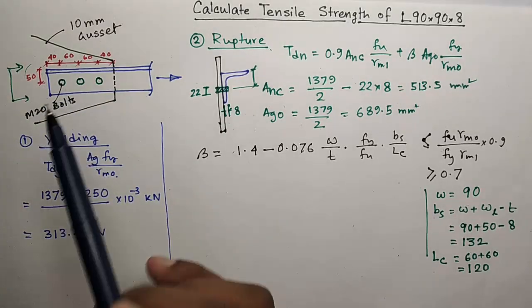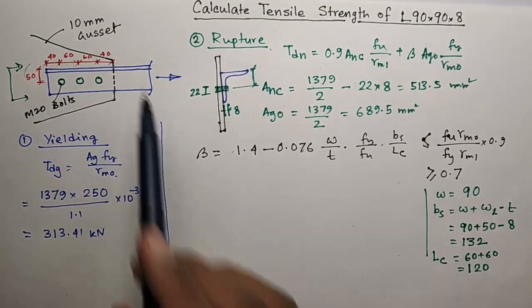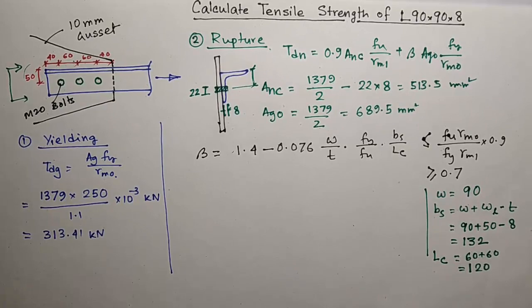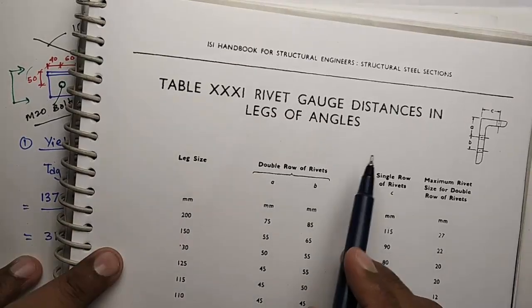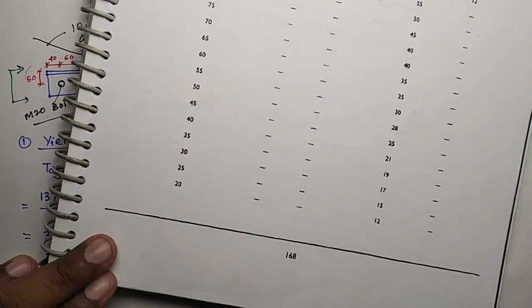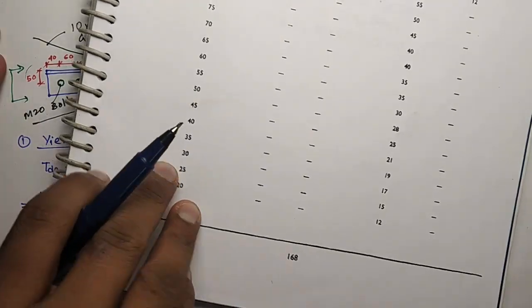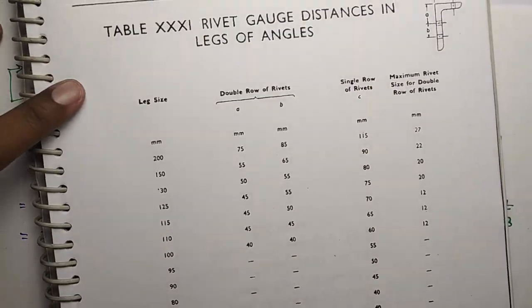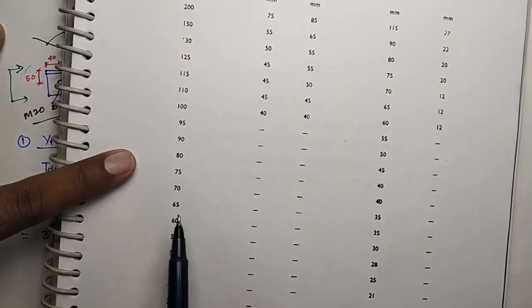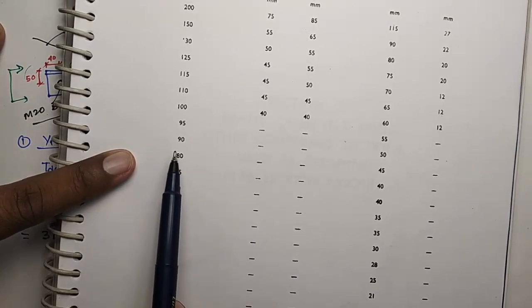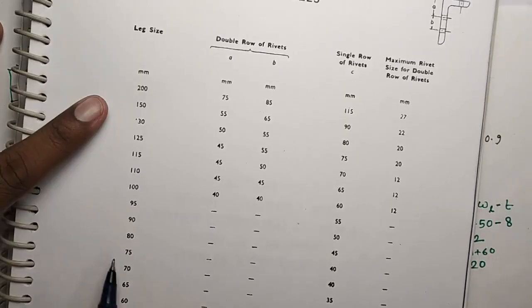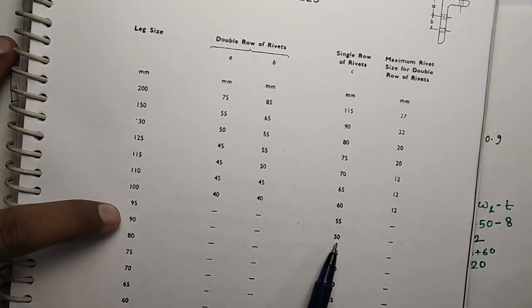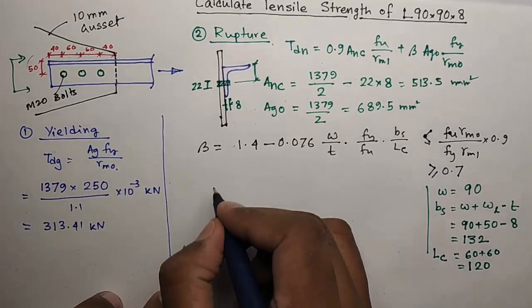If this gauge distance of bolts is not given in the question, you can find it from this table of SP6-1, page 168. It is the gauge distance in leg of angles. You see here for 90, the gauge distance is 50. Now calculate the beta value.